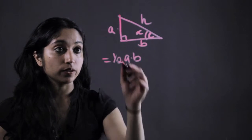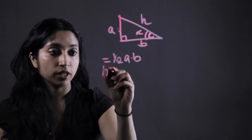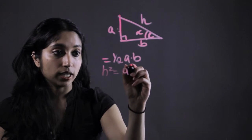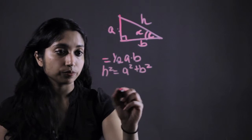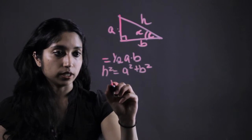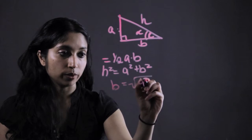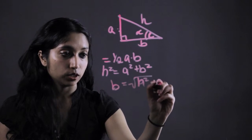So if we were given a side and the hypotenuse we could use the Pythagorean theorem h squared equals a squared plus b squared to solve for b. So it would just be b equals the square root of h squared minus a squared.